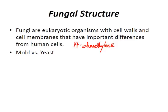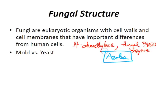Polyenes disrupt fungal membranes by binding to already-formed ergosterol. Fungi contain microtubules and that's how they undergo mitosis. Griseofulvin inhibits mitosis by interfering with the mitotic spindle of fungi. Echinocandins inhibit the synthesis of glucan. Dimorphic fungi can interchange between mold and yeast forms depending on temperature.